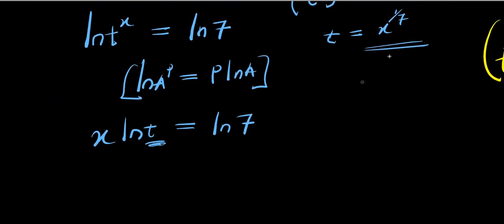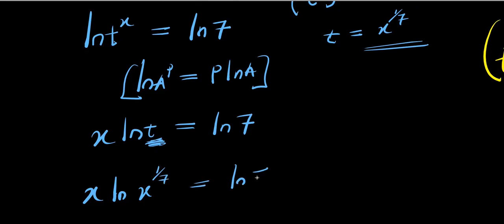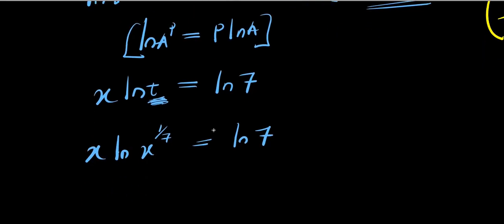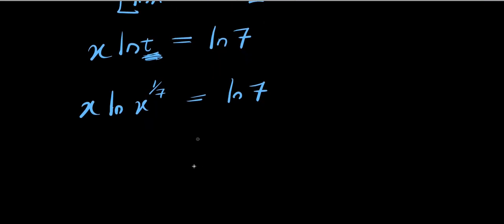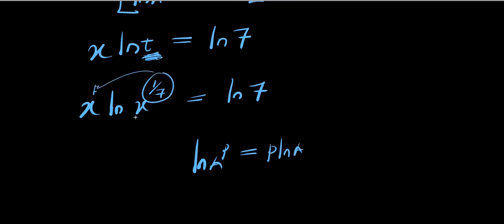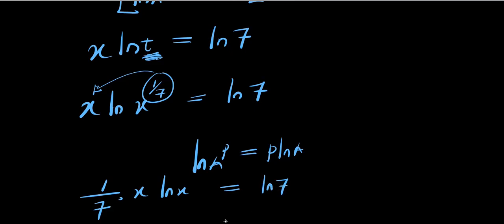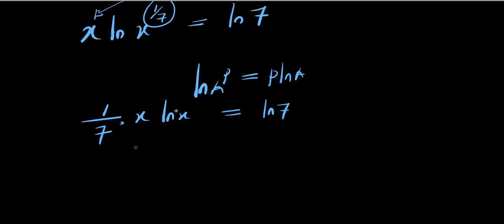I replace t with x to the power of one over seven in the logarithm expression. So I have x times the natural log of x to the power of one over seven equals the natural log of seven. Applying the log power rule, one over seven comes in front, giving one over seven times x times the natural log of x equals the natural log of seven. Multiplying out, this is x over seven times the natural log of x equals the natural log of seven.